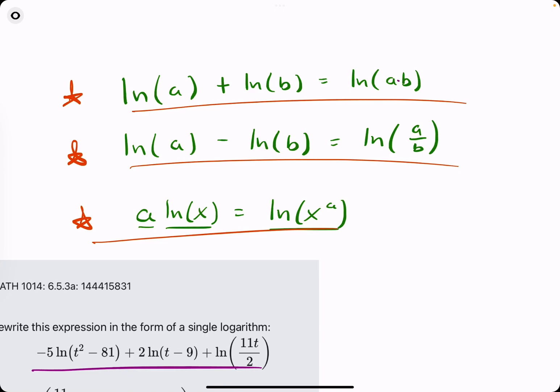We have ln(a) + ln(b) = ln(ab). And if we have ln(a) - ln(b), that's ln(a/b). And then if we have a coefficient in front of a natural log of x, we can rewrite that whole expression as ln(x^a), to that coefficient's power. It's like we brought up a as the exponent of whatever's inside the natural log.